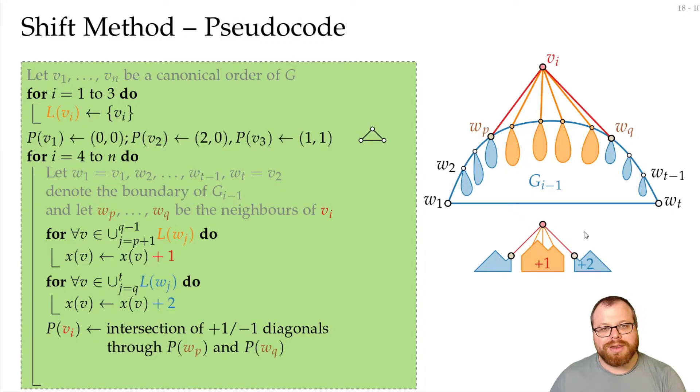Now the only thing that remains is find the L set for V_i. But that again is very simple. We just take the union of the L sets of all the vertices in between here and add V_i to it. And that's the whole pseudocode.